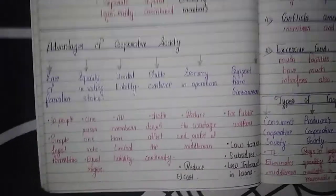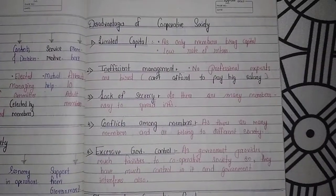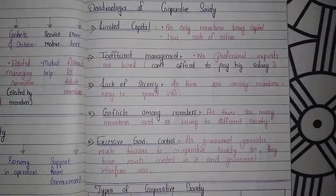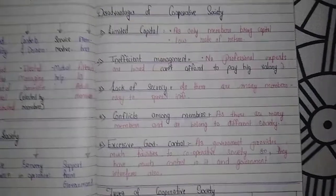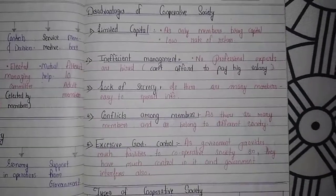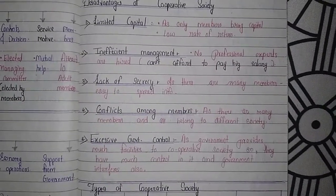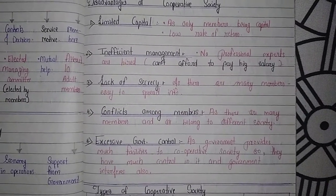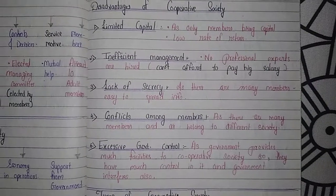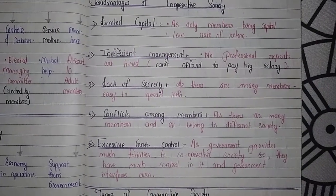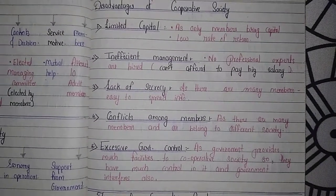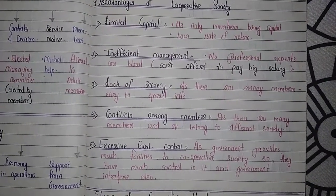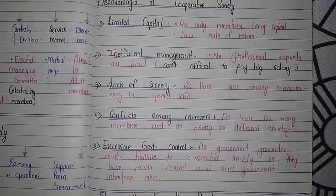Now the disadvantages of cooperative society. The first is limited capital — as only members bring capital, there is limited capital available. The second is low rate of return — members do not get very high returns from this type of business.